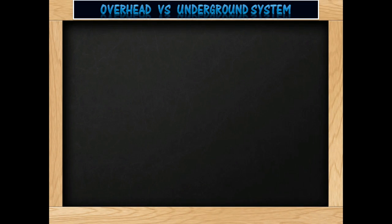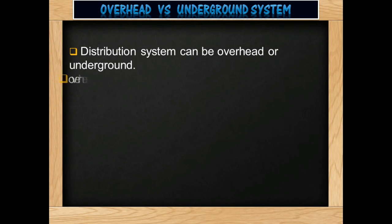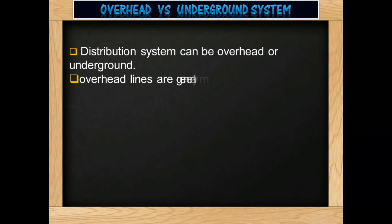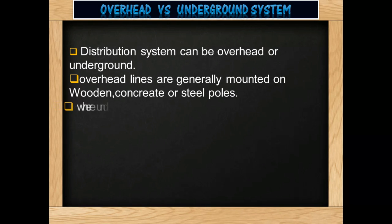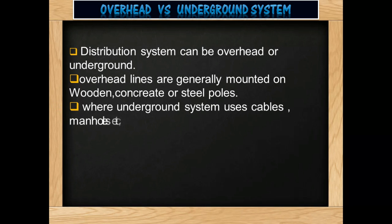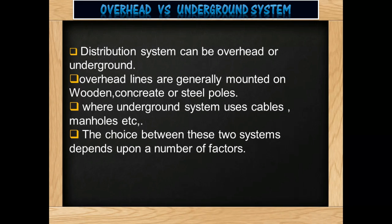Now, overhead and underground systems. The distribution system can be overhead or underground. Overhead lines are generally mounted on wood, concrete, or steel poles, whereas underground systems use cables, manholes, etc. The choice between these two systems depends upon a number of factors.